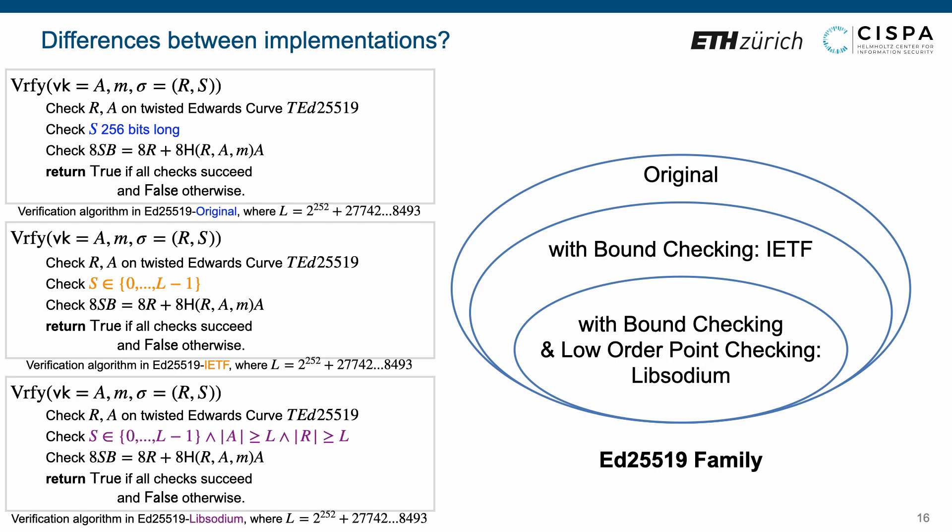Compared to ED25519 original, the IETF and Libsodium versions involve bound checking. Namely, the IETF and Libsodium versions check whether the value s is in the range from 0 to l-1. Further, the Libsodium version additionally involves low order point checking. Namely, the Libsodium version also checks whether the points a and r both have order greater than or equal l. The relation between these three variants is depicted in the Venn diagram.